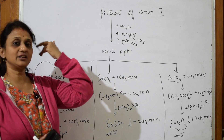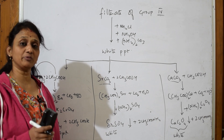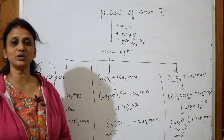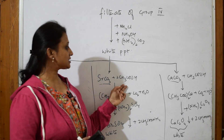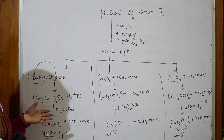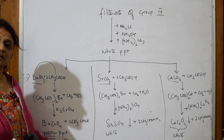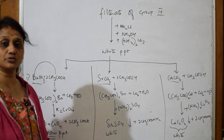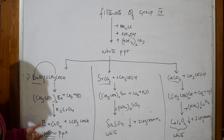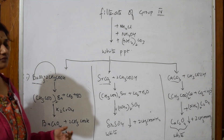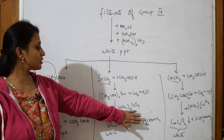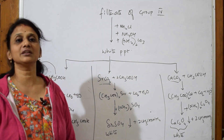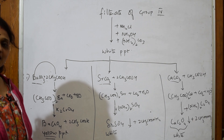To summarize Group 5: cations are barium, calcium, and strontium. Group reagent is ammonium chloride, ammonium hydroxide, and excess ammonium carbonate. Take the precipitate from Group 4, add H₂S and the group reagents — you get a white precipitate. Divide into three portions, add acetic acid to each, then add potassium chromate (yellow ppt = barium), ammonium sulfate (white ppt = strontium sulfate), and ammonium oxalate (white ppt = calcium oxalate). Calcium and barium can also be confirmed by flame test.